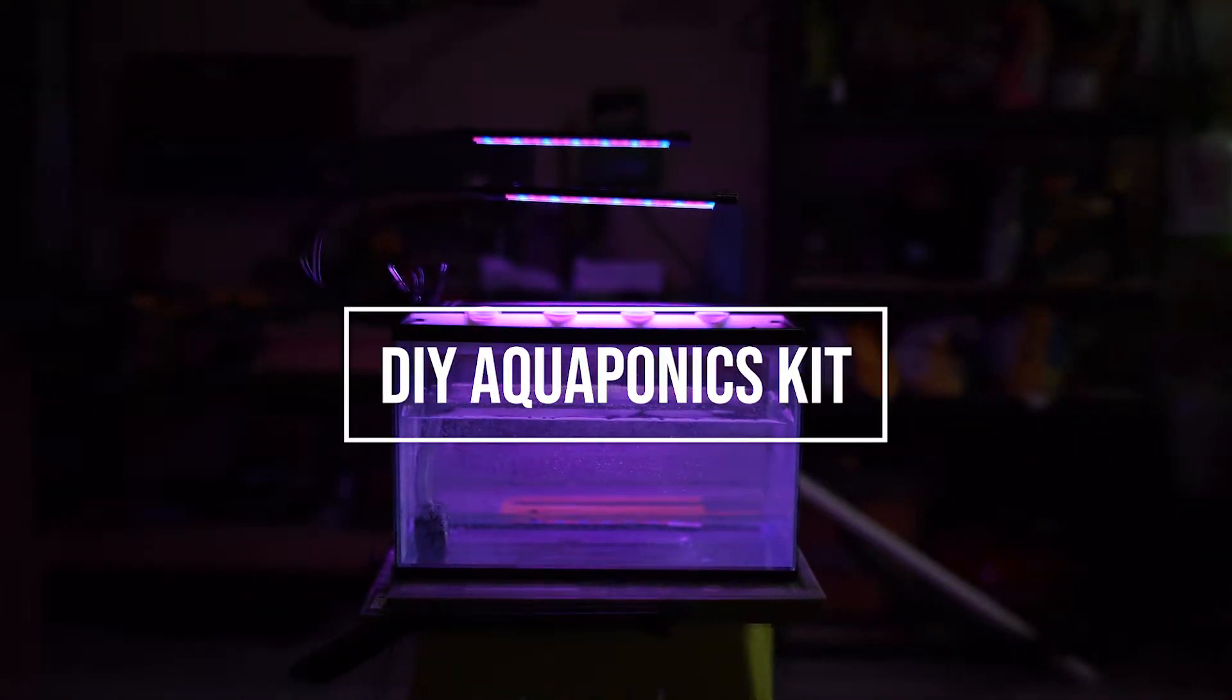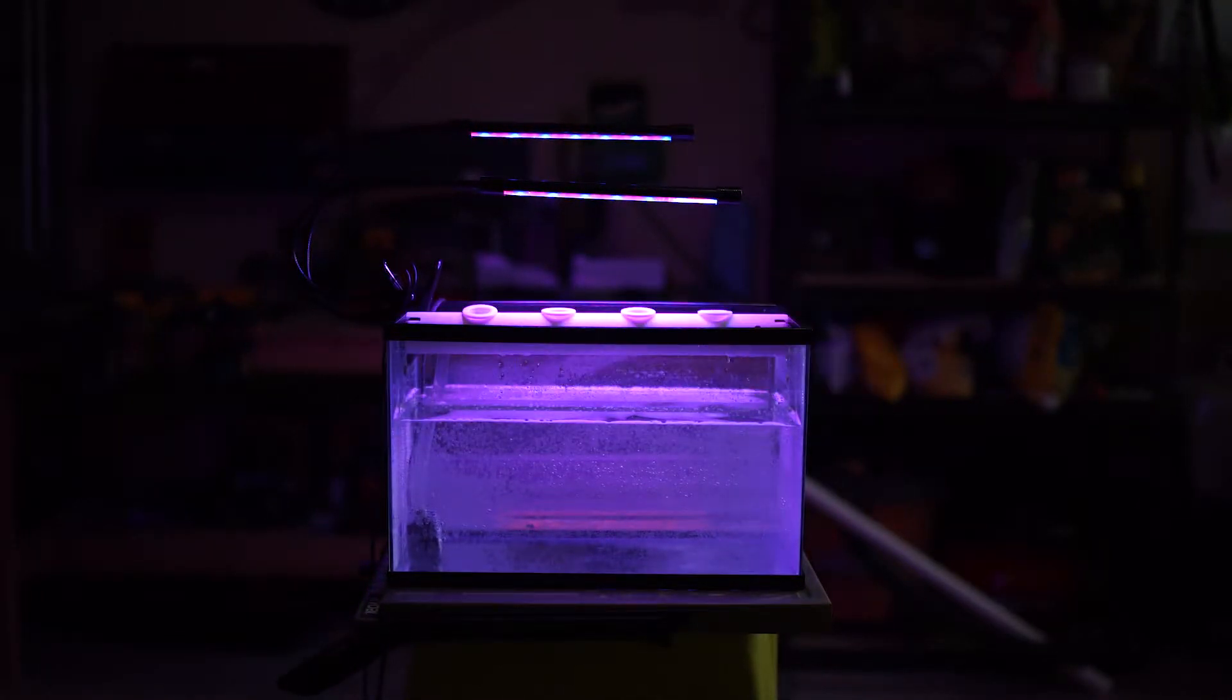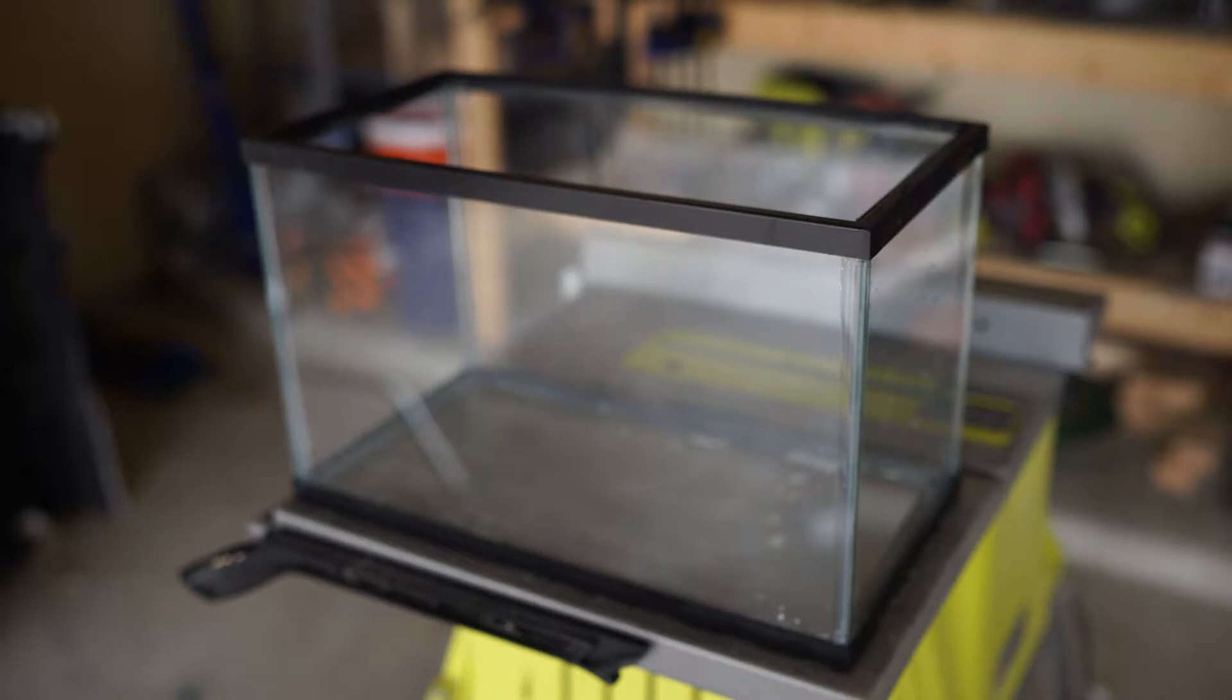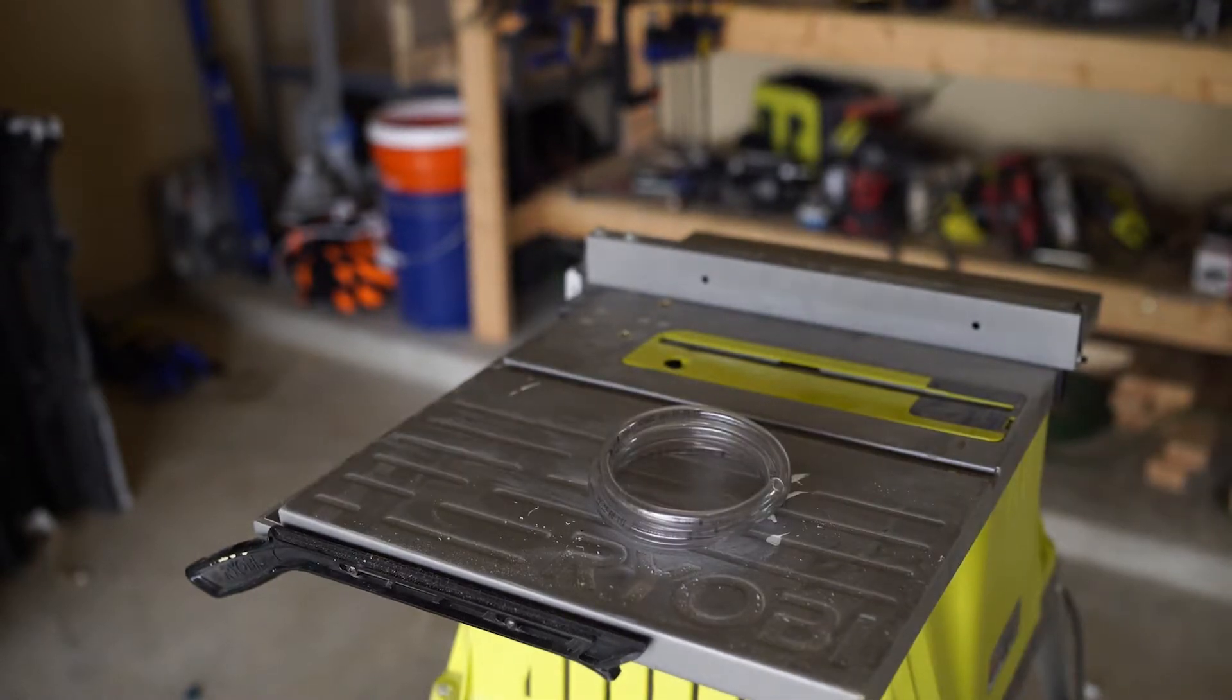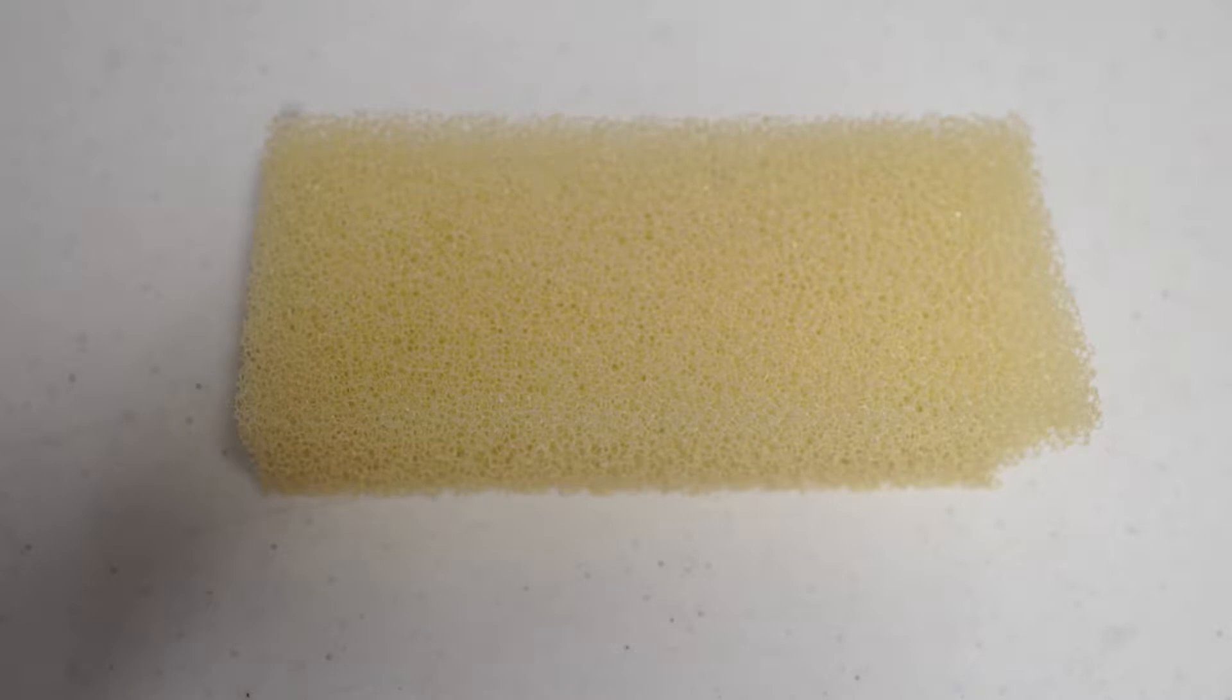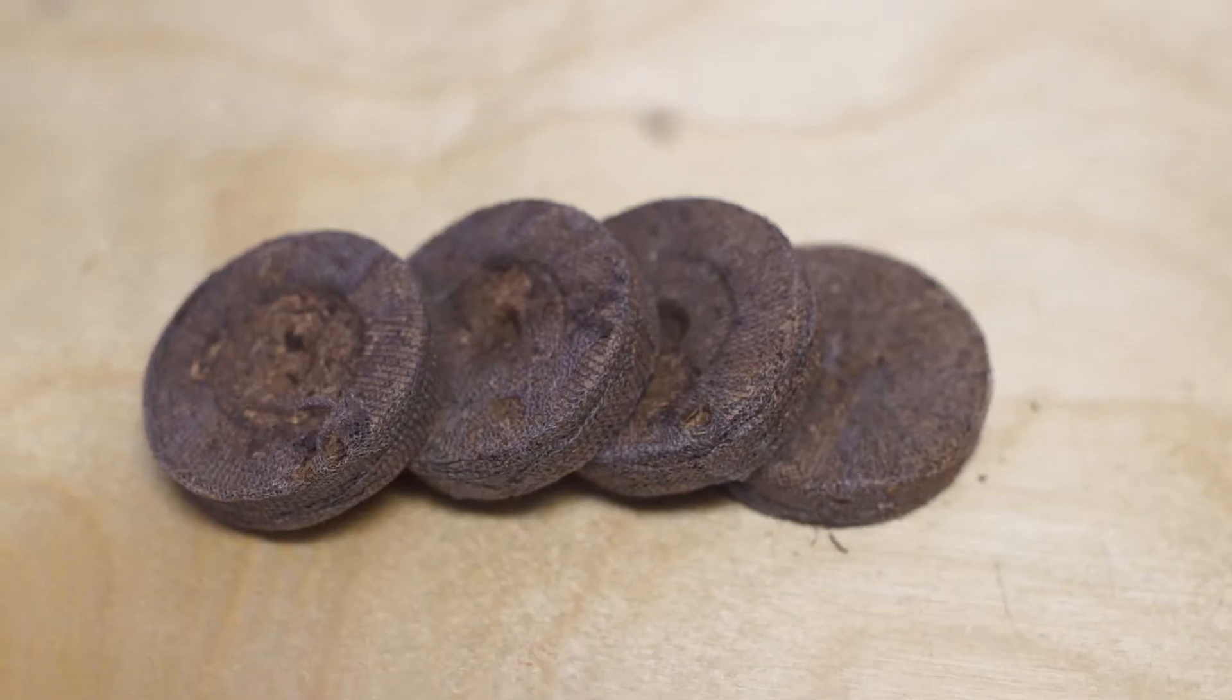Alright, today we're going to make a DIY aquaponics kit. Here are some items you will need: a 10-gallon aquarium, but a 5-gallon would work as well, some one and a quarter inch PVC pipe, aquarium tubing, foam filter media, net pots, and some peat pods.